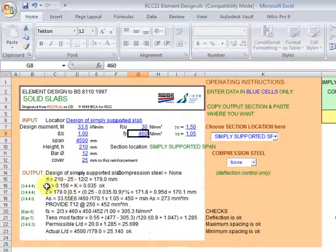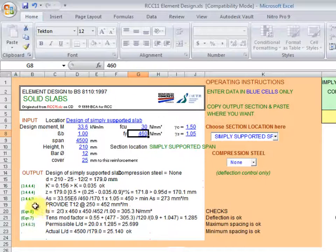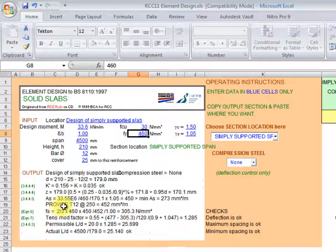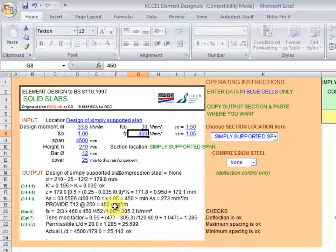Now we can see the output. We have our D calculated as 179mm and the lever arm calculated as 170.1mm. We have our As, the area required at 450 mm²/m. The As minimum has been calculated as 273 mm²/m and the program has provided: provide T12 at 250 center to center which corresponds to 452 mm²/m.